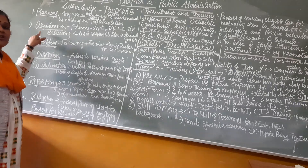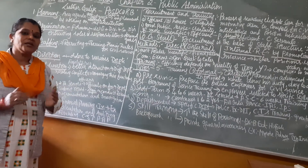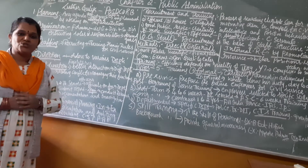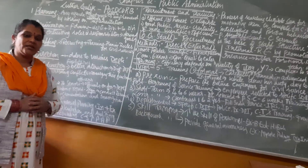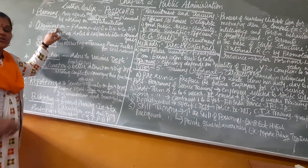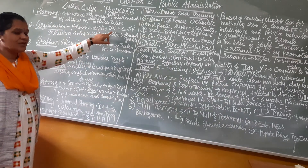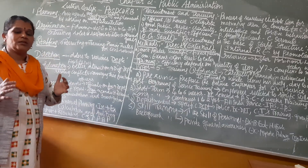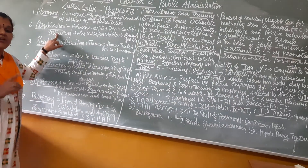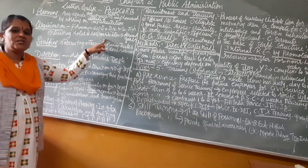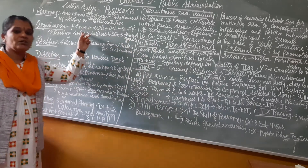Second is organization. Even in school, when we want to hold a small function, we first make a plan and then organize it — collecting a list from students on who will do anchoring, who will give the welcome speech, all done in a systematic manner. Similarly, in public administration, organization plays a very important role. Different departments, divisions, and subdivisions are correlated depending upon the project being implemented, and each department is entrusted with specific roles and responsibilities to achieve the desired goal.